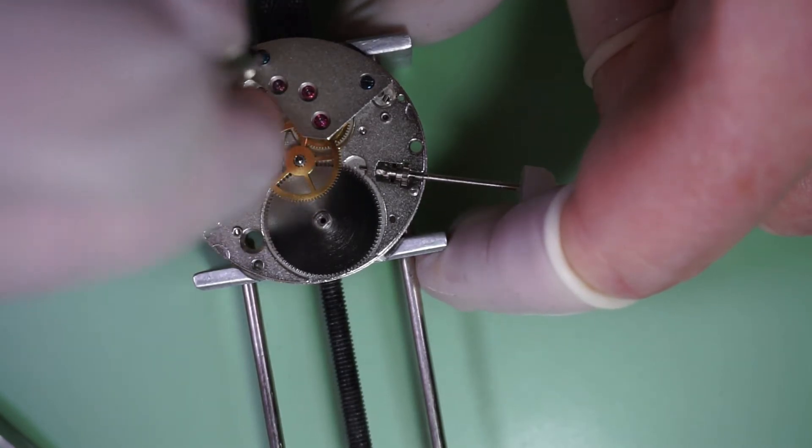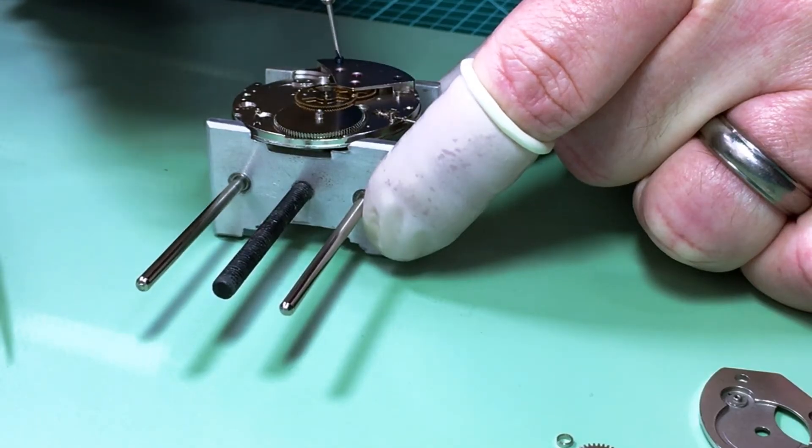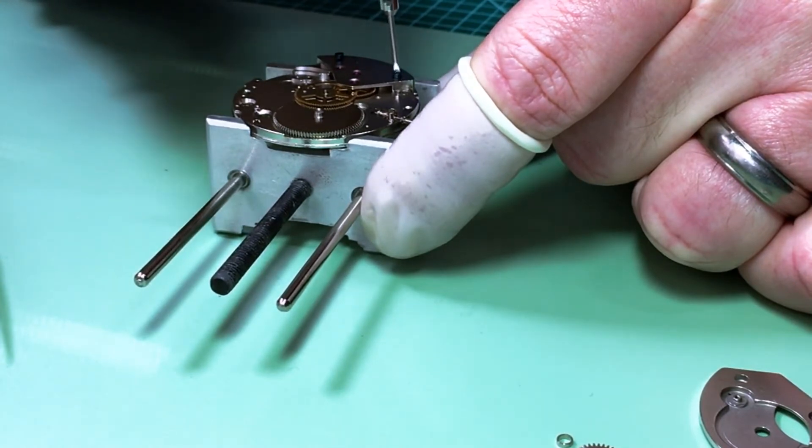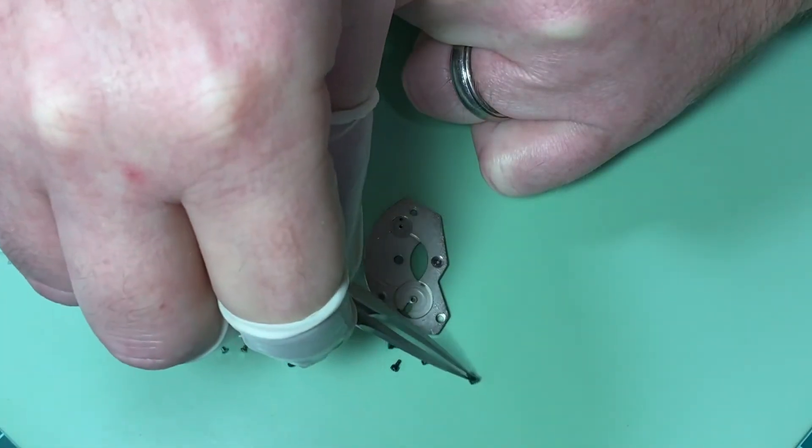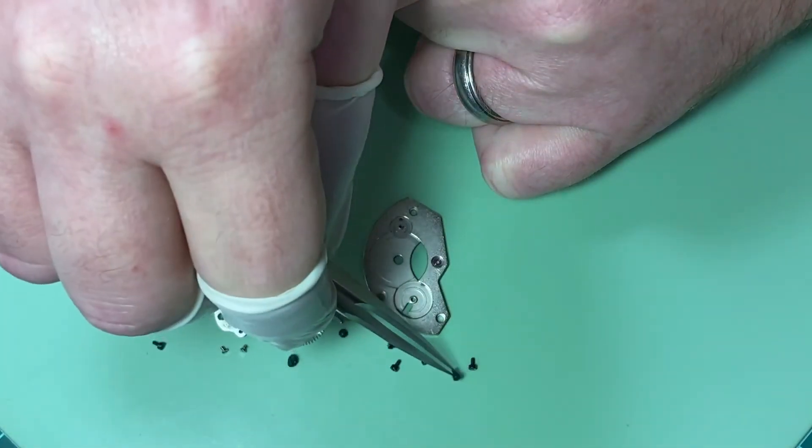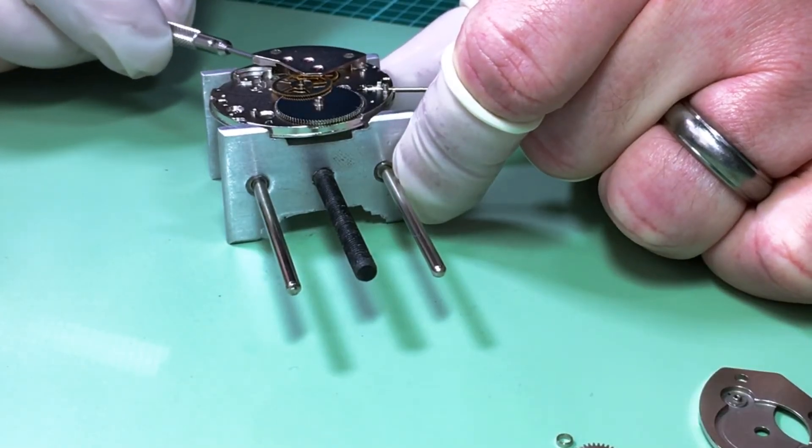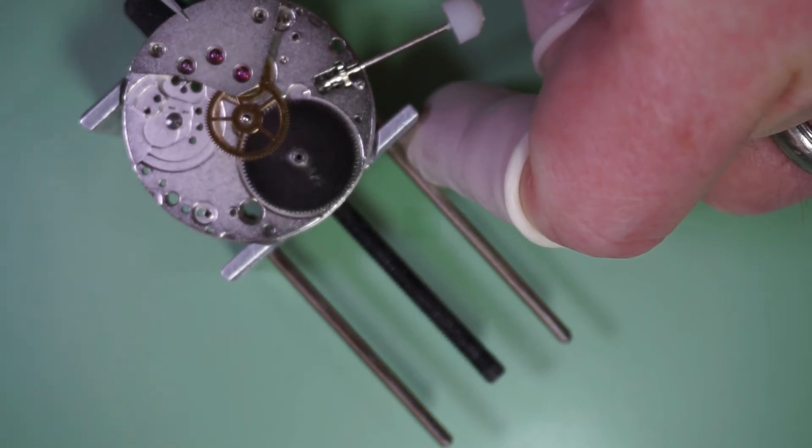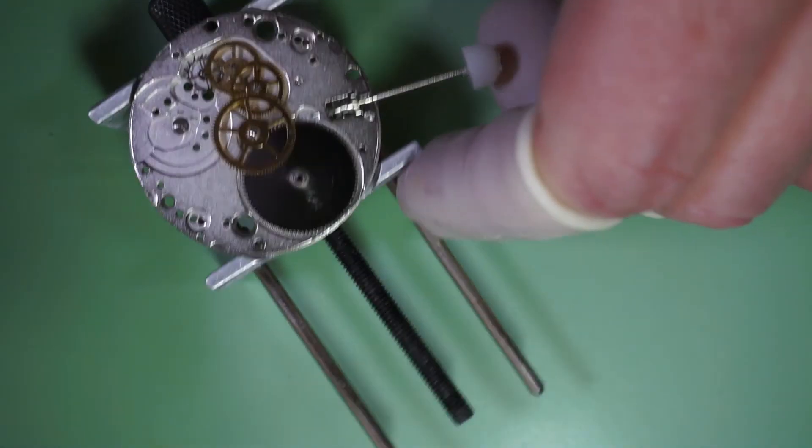Next I will remove the train wheel bridge, which covers the majority of the train of wheels, which I think is the most beautiful part of a watch movement. Now this bridge is held in place by two screws. And another nice thing is they are identical to the barrel bridge screws. And again, there are slots on the side of the plate between the bridge and the base plate. And those three jewels on top capture the pivots of the wheels underneath. And there we can see the train of wheels.